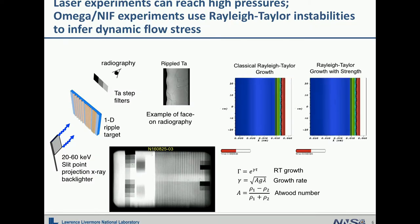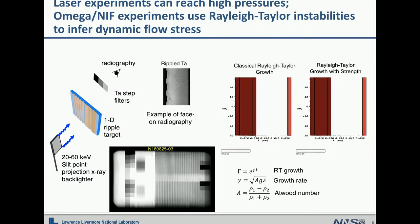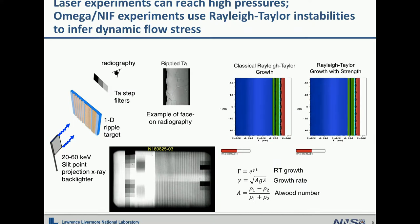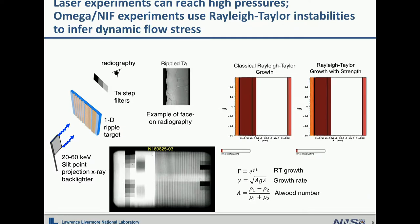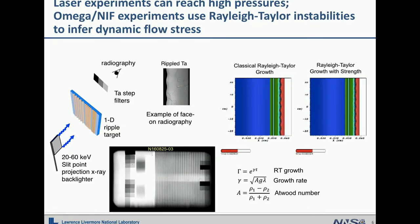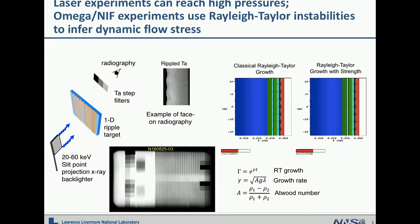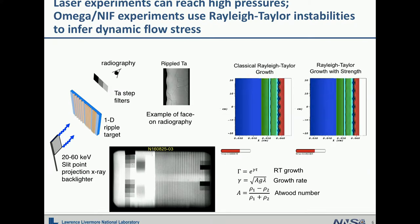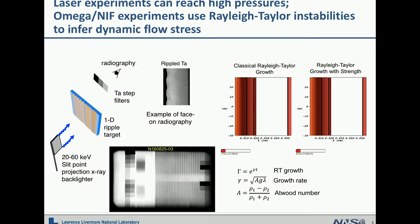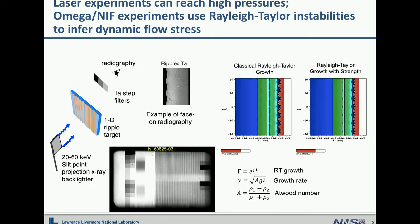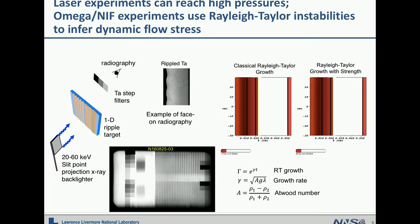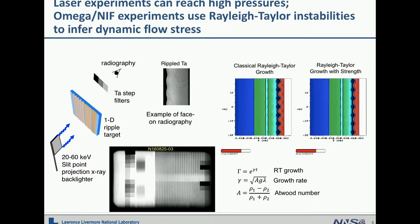Laser experiments can reach high pressure, unlike a Hopkinson bar which operates at very low pressure. We started this experiment on Omega and NIF using Rayleigh-Taylor instability properties to infer dynamic flow stress. In the classical case, low density goes into high density and the growth is well-defined by the Rayleigh-Taylor equation. However, if the material has strength, the Rayleigh-Taylor growth will be suppressed. We design this experiment with a pre-imposed sine wave and measure the growth amount by radiography, using a thin X-ray source. In this case, it was a tantalum sample in a solid state.